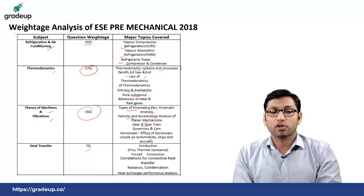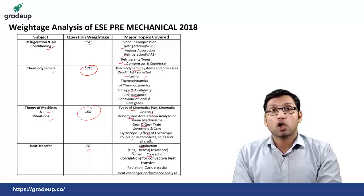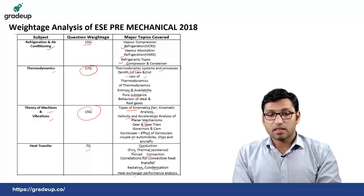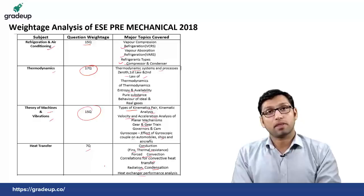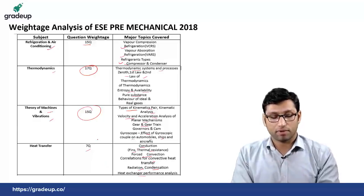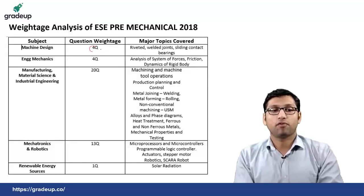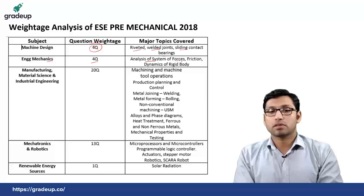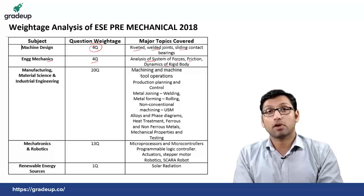From heat transfer there were 7 questions from the topic of conduction, fins and thermal resistance. From forced convection — correlations for different convective heat transfer — radiation, condensation and heat exchanger performance analysis. From machine design there were 4 questions from the topic of riveted and welded joints and sliding contact bearing. From engineering mechanics there were 4 questions from the topic of analysis of system forces, friction and dynamics of rigid body.